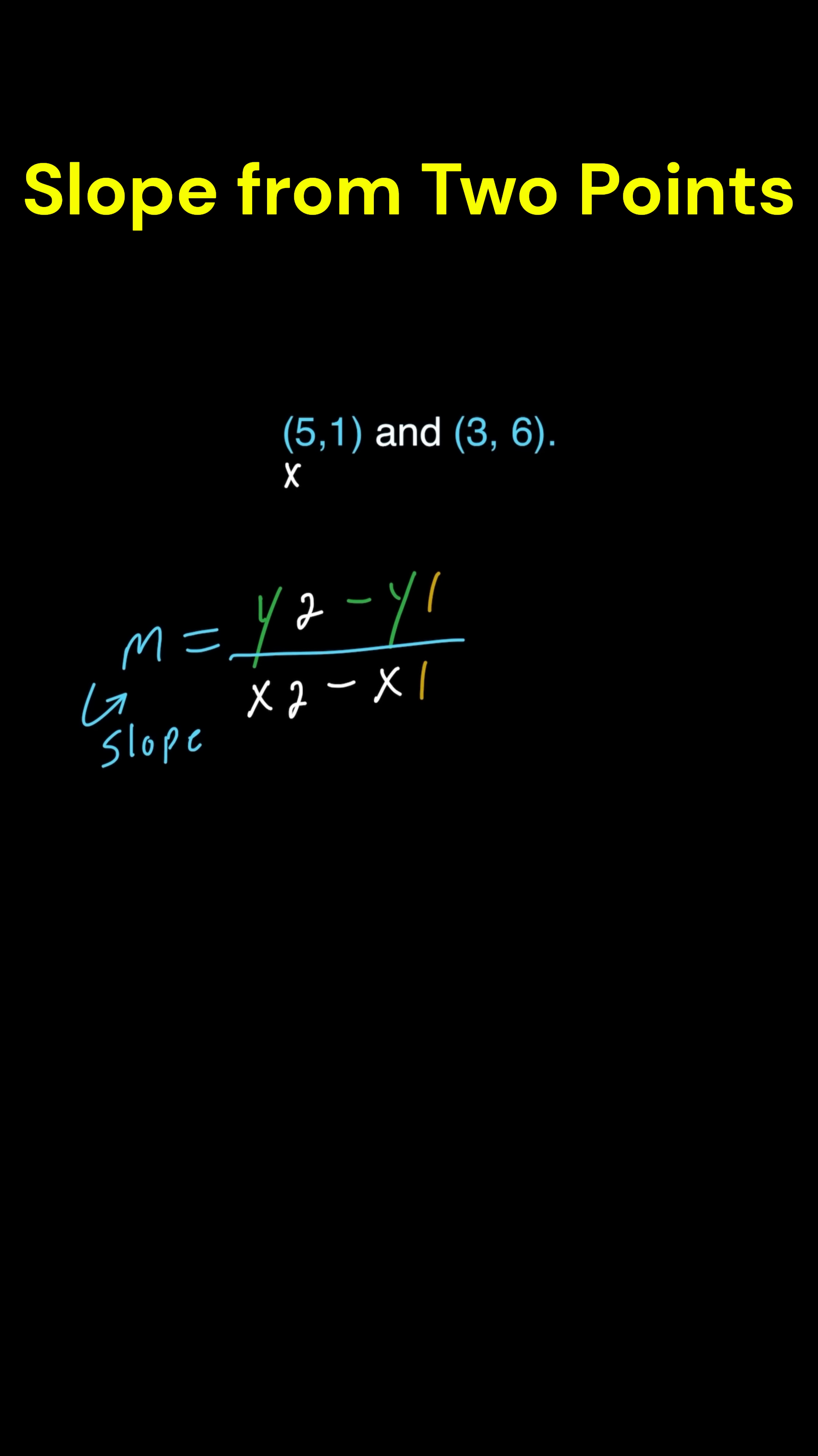So let's take a look at the ordered pairs. Let's substitute them into our formula. y2 is equivalent to 6 minus y1. y1 equals 1. All of this over x2 is 3 minus, and what is x1? 5.